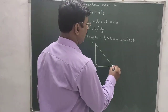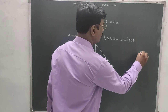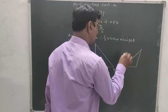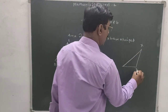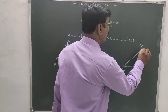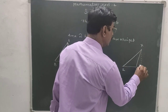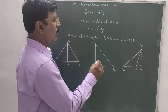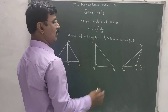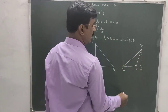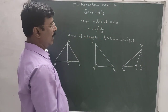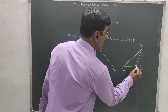In an obtuse triangle XYZ, we extend the segment and draw the height. This triangle is called obtuse because one of its angles is obtuse. The height is XW, drawn outside the triangle.